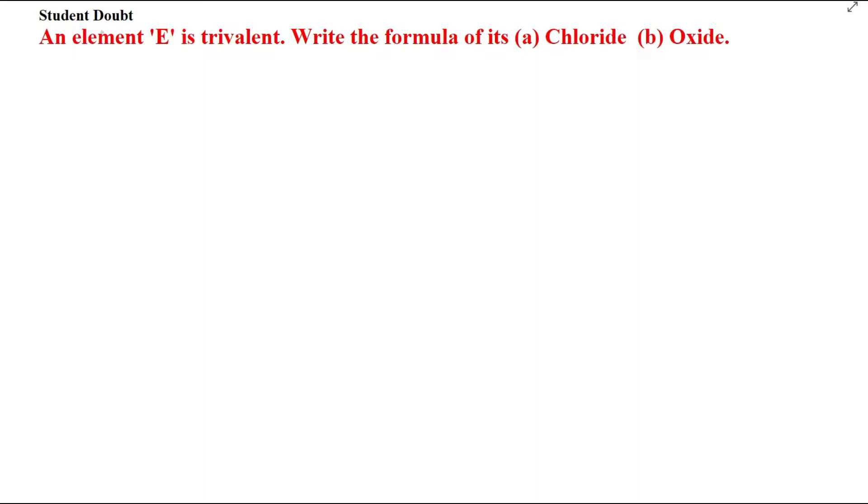A student has a doubt. The problem states that an element E is trivalent. Write the formula of its chloride and oxide.